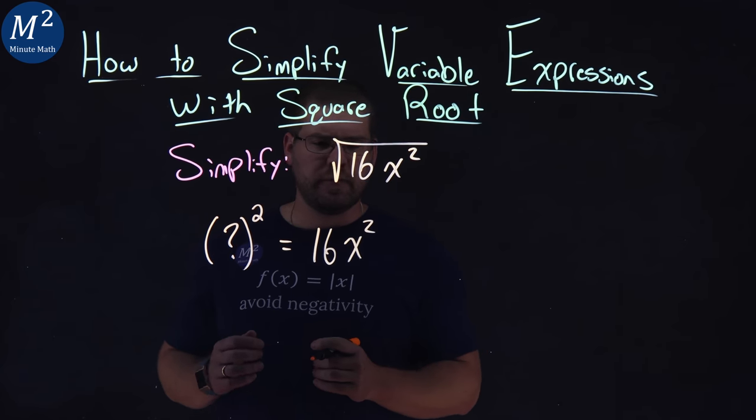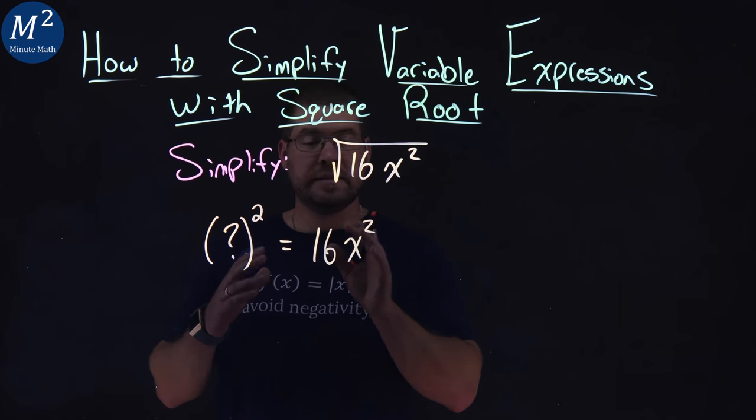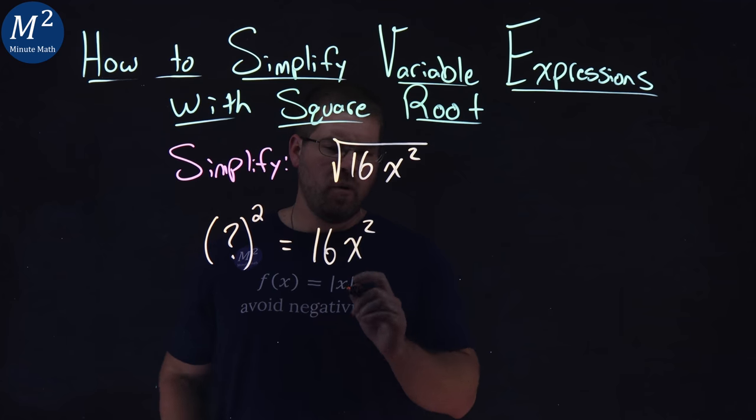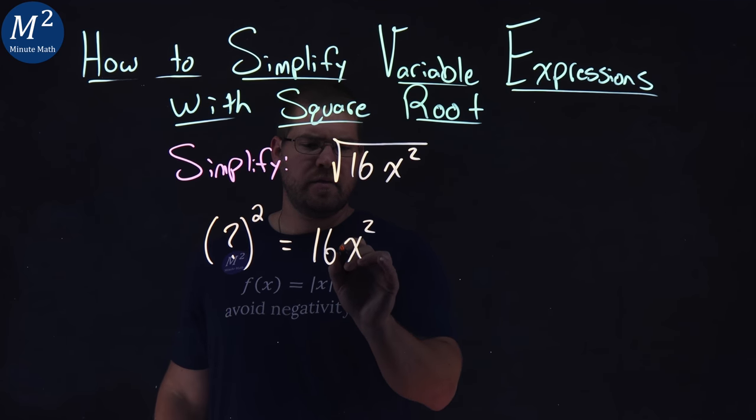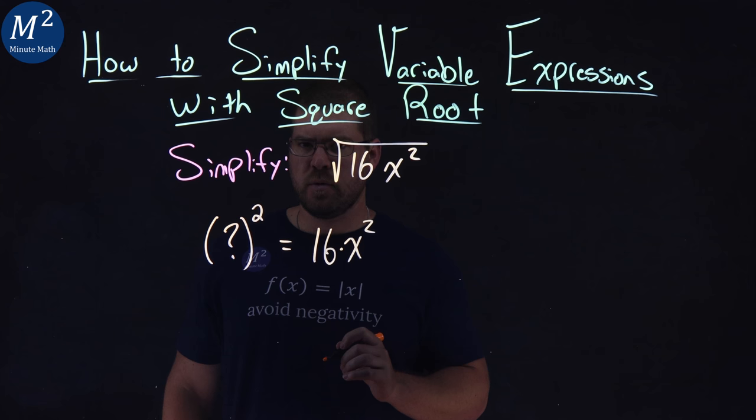This becomes a little more difficult. What value squared gives me 16x squared? Well, it might be easier to break this down into two values, 16 times an x squared.